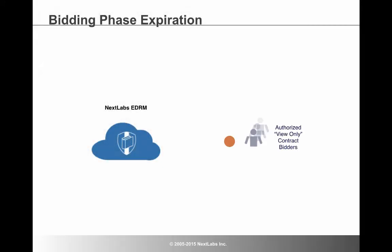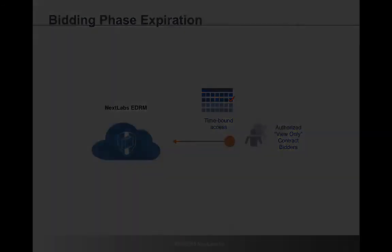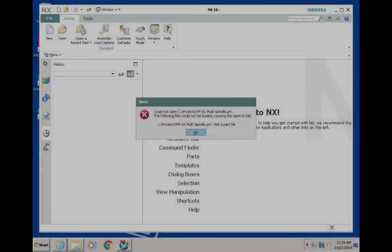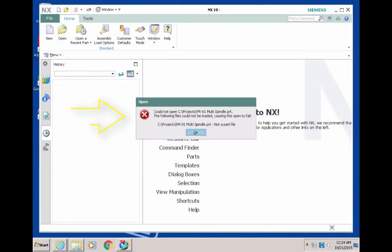Another common use case in which NextLabs EDRM can be applied is for expiring access to files after a certain period of time. For example, at the end of a contract bidding phase, NextLabs EDRM can automatically detect when an expiration date occurs and deny access.